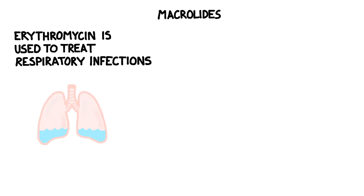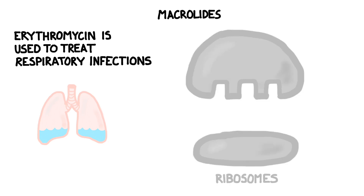Other antibiotics attack prokaryote-specific structures in a similar way. Erythromycin is a type of antibiotic called a macrolide, and it's commonly used to treat respiratory infections. It attacks bacterial ribosomes, which are slightly different than eukaryotic ribosomes. Ribosomes are heavily involved in protein synthesis and have three active sites: the E site, the P site, and the A site.